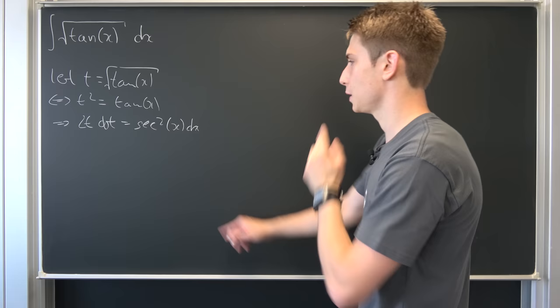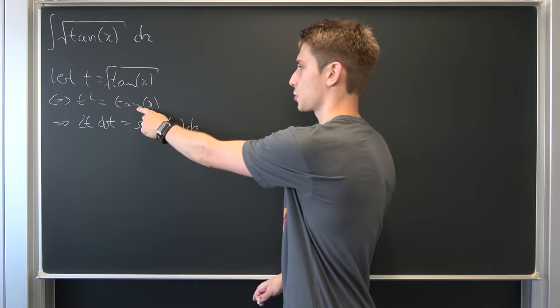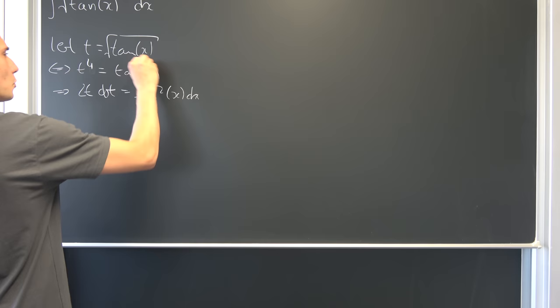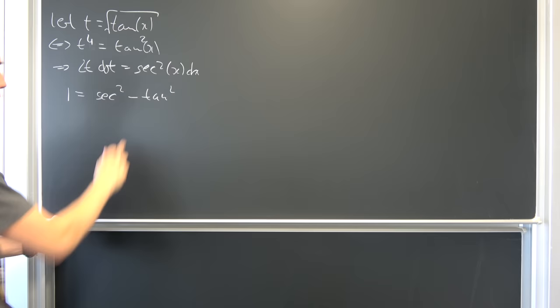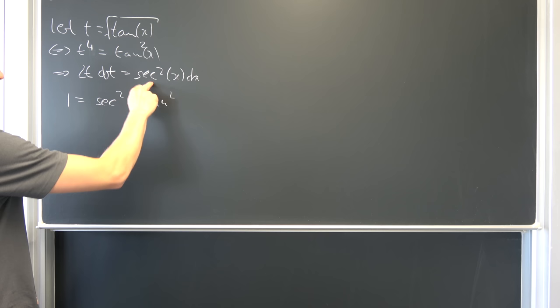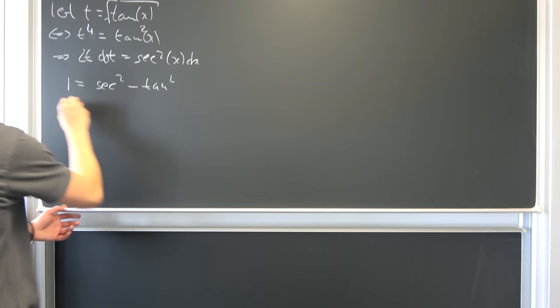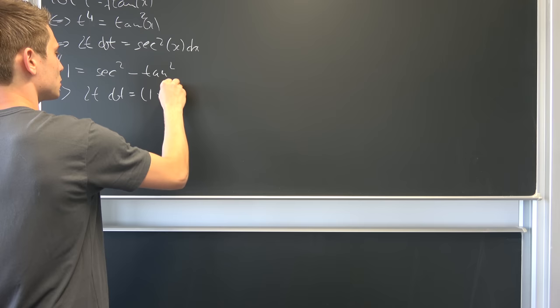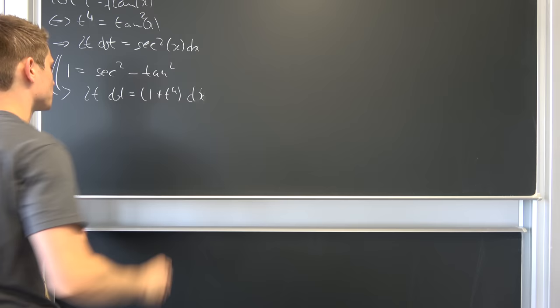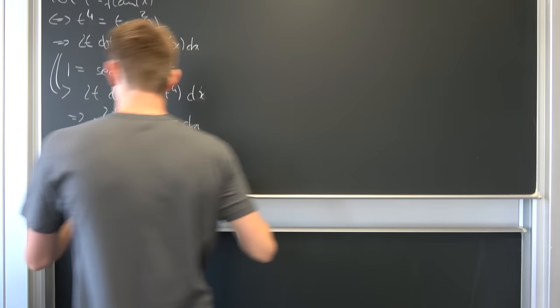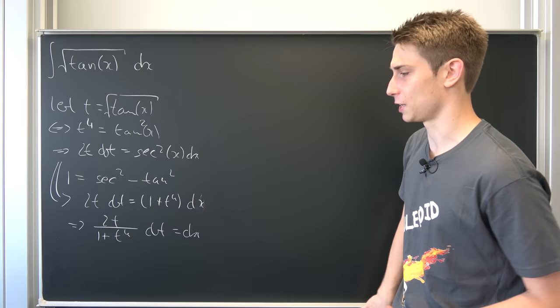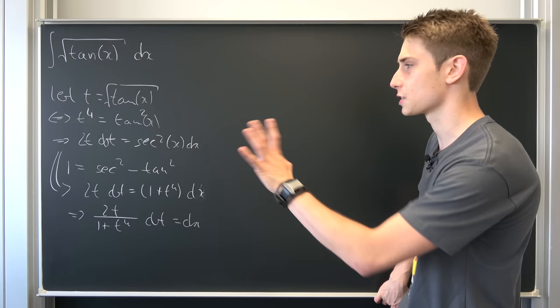That's already looking quite ugly. Now we need to get the secant squared somehow. We could just square both sides — so tangent squared of x is nothing but t to the fourth power. But we also know an identity: 1 is nothing but secant squared minus tangent squared. And we can solve for the secant squared. So adding that on both sides, we know that secant squared is nothing but t to the fourth power plus 1. That also means that 2t dt is nothing but 1 plus t to the fourth power times dx. And now we can divide both sides by this thing — so 2t over 1 plus t to the fourth power dt is nothing but dx. That's absolutely going to escalate quite quickly. This looks like a lot of partial fractions stuff.